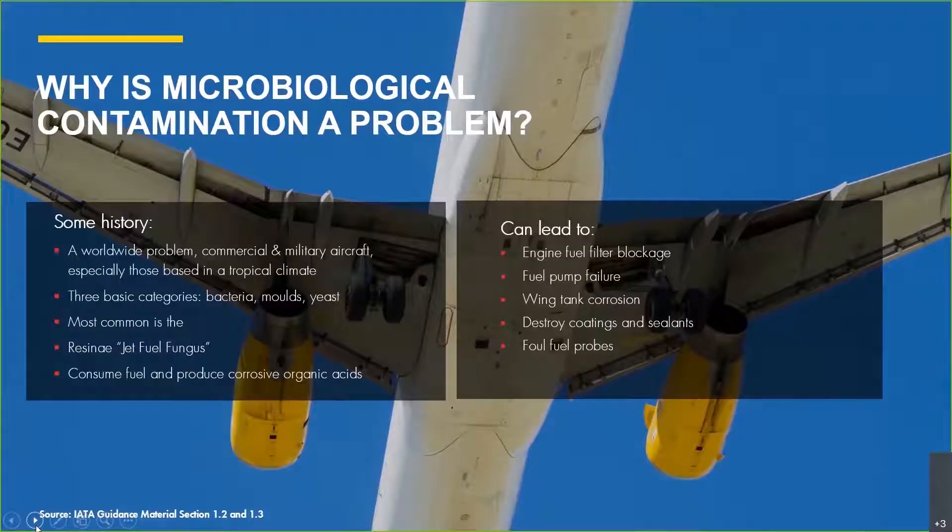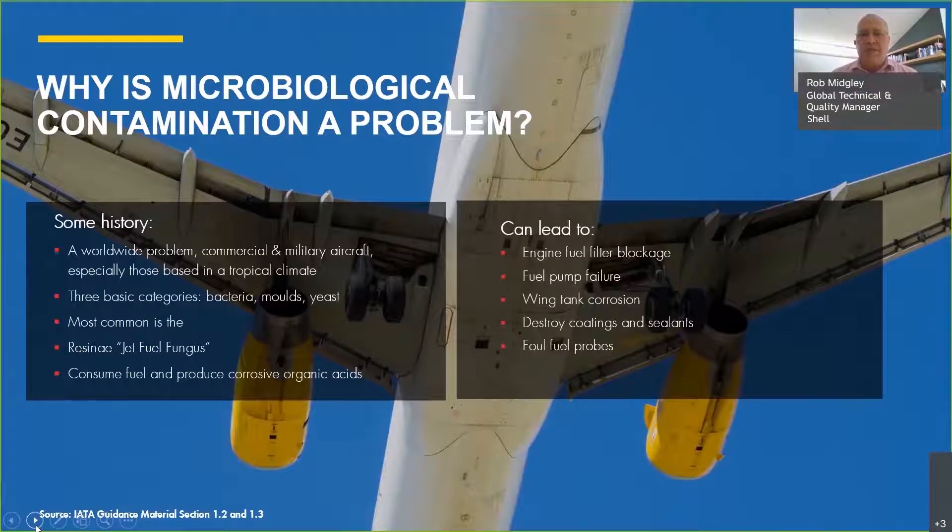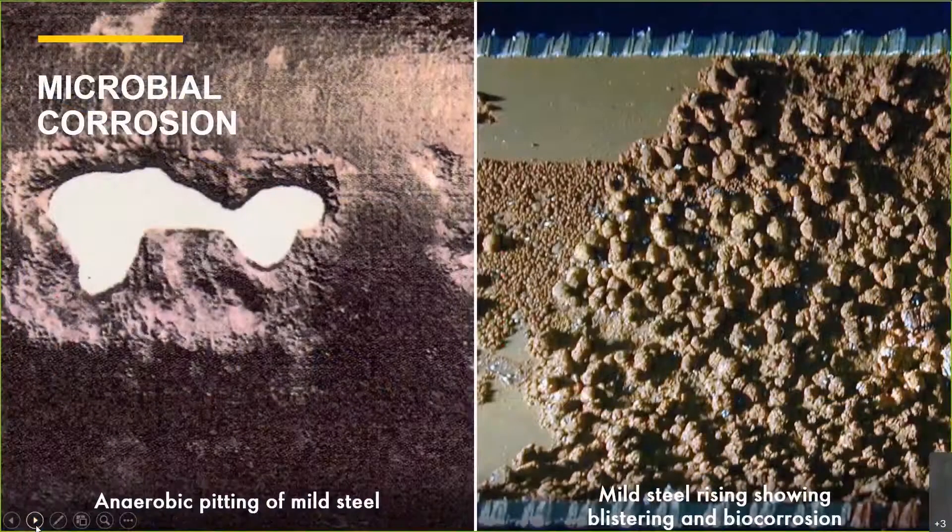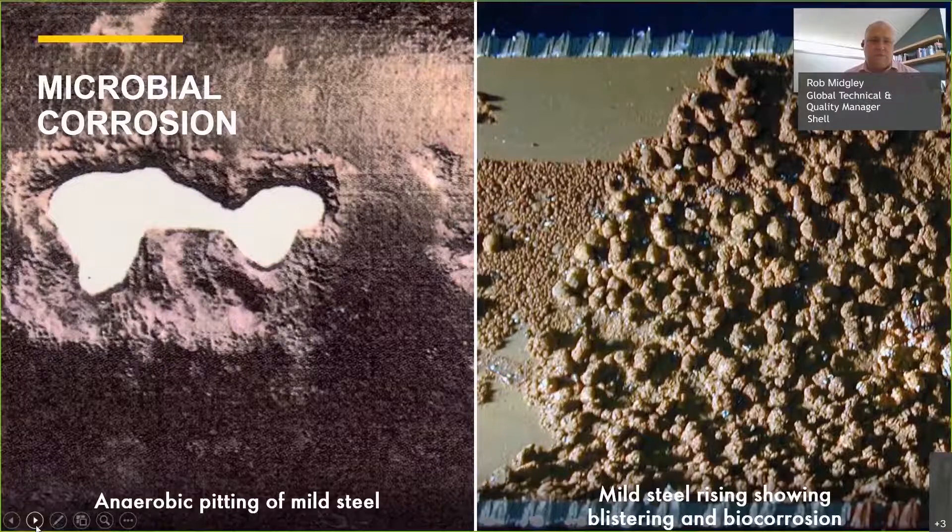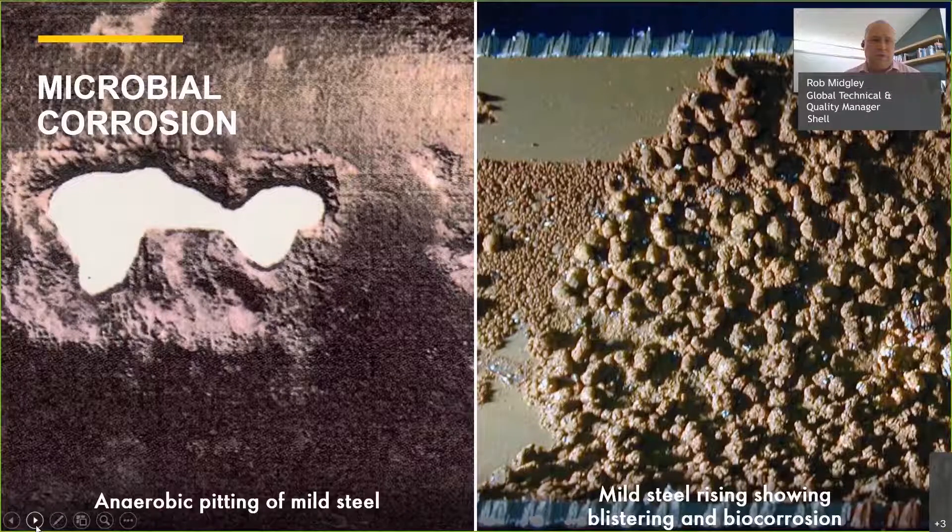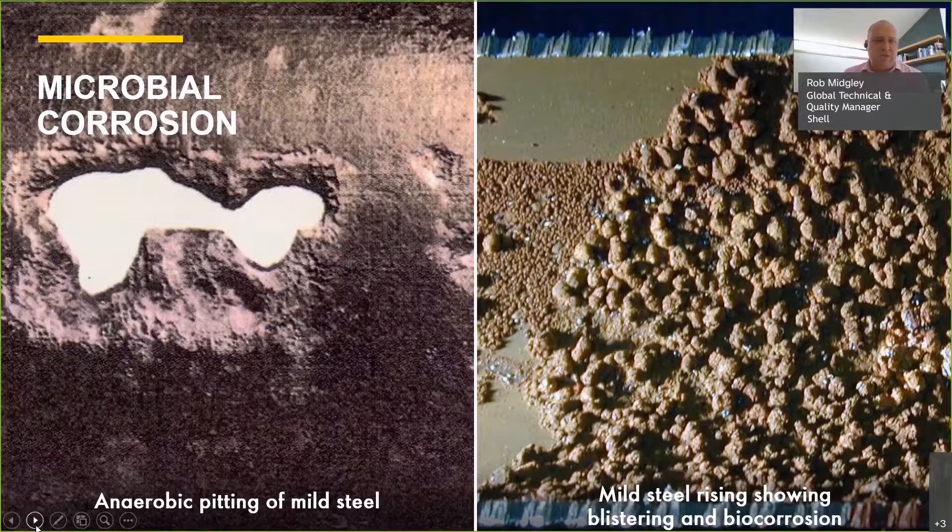Why do we see it as a problem? It starts to lead to corrosion problems on aircraft. Seals become brittle and tend to shrink. There's a picture here, especially on the left which is quite dramatic, of steel. It's not just pitting, that's a hole right through a steel plate, and that's due to microbial activity.